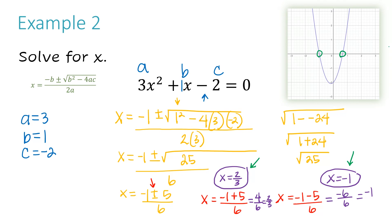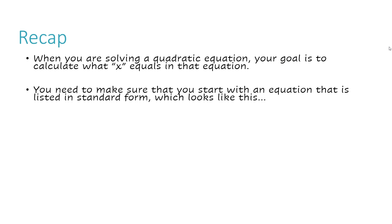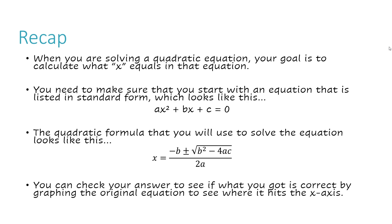Now let's take a recap. When you are solving a quadratic equation, your goal is to calculate what x equals in that equation. You need to make sure you first start with an equation listed in standard form: ax squared plus bx plus c equals 0. The quadratic formula you will use looks like this: x equals negative b plus or minus the square root of b squared minus 4ac, all over 2a. You can check your answer by graphing the original equation to see where it hits the x-axis.